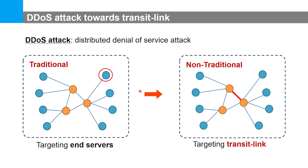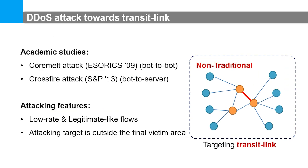Let's start with the example of a small network. The blue node is the end-host — maybe legitimate users or botnet — and the orange node is the router to transmit data packets. A traditional denial of service attack selects a particular server as the attacking target, while a denial of service attack towards the transit link attacks the infrastructure by choosing a transit link as the target. Such an attack can be launched by a botnet sending many small flows from many different sources to different destinations, where all flows share one particular link. Academic studies have already proposed these as link flooding attacks.